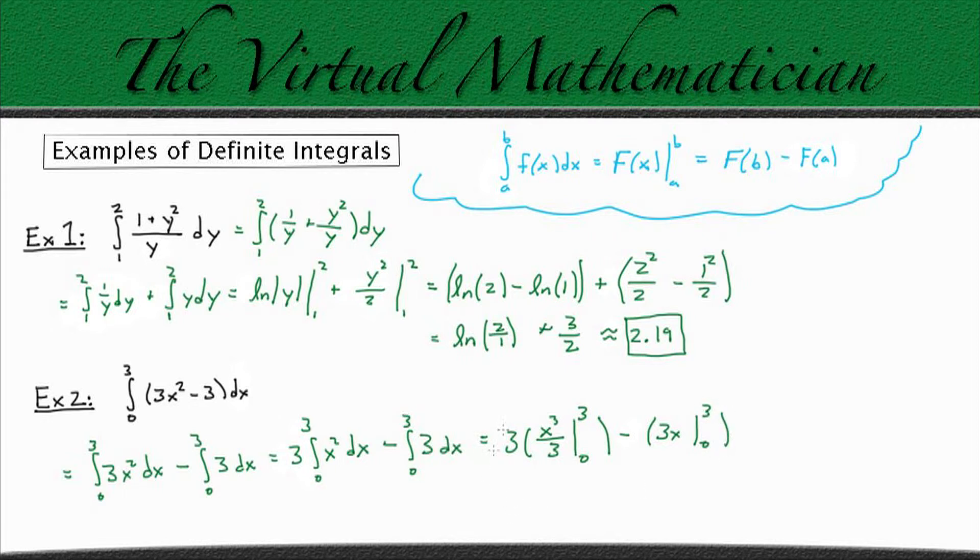So now we can use the fundamental theorem of calculus and be done. This is going to be 3 times 3 cubed over 3 minus 0 cubed over 3, minus 3 times 3 minus 3 times 0.